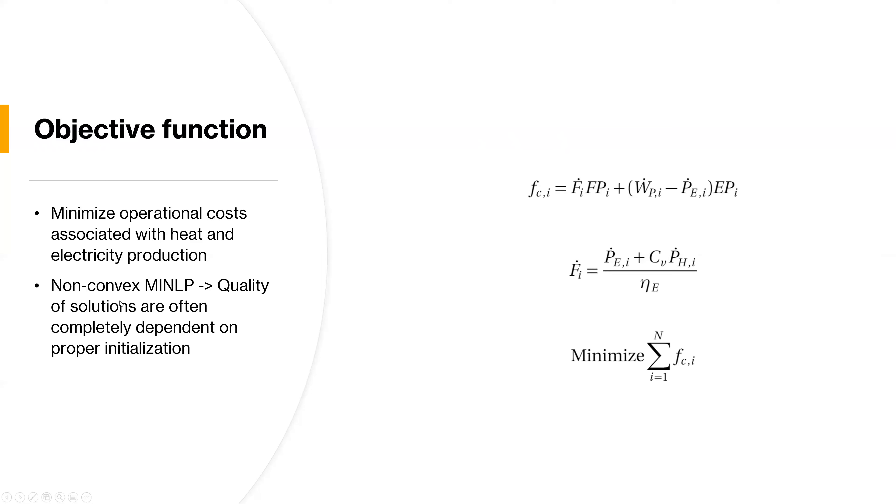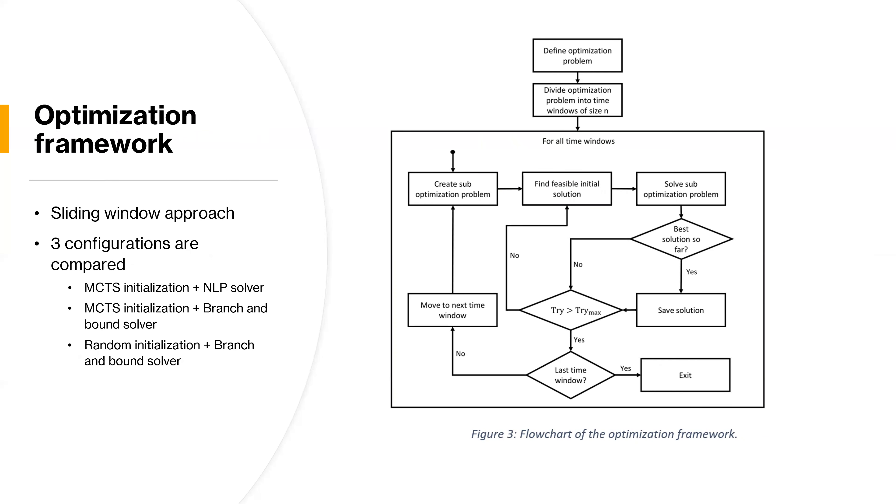This is a nonconvex mixed integer nonlinear program. This means that the quality of the solutions we get to this optimization problem is very dependent on how we initialize our solvers. And this means that we have implemented this optimization framework, where we use a sliding window approach. This is very inspired from the way you solve, or the method you use in model predictive control, where you have a given horizon. And then you optimize for this given horizon, and then you implement a part of the solution that you obtain. And this is the same method we use for our framework.